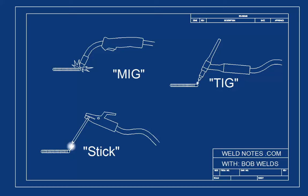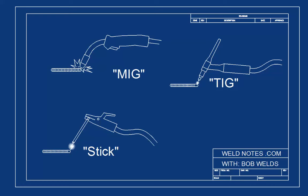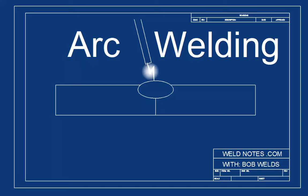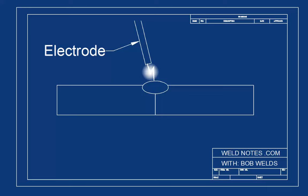All three of these welding processes use a powerful arc of electricity to heat the metal to the melting point. The arc is like a miniature lightning bolt between the base metal and the piece of metal on the torch called an electrode.